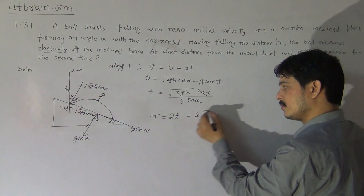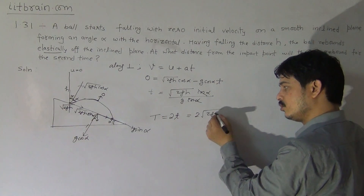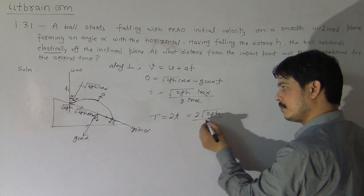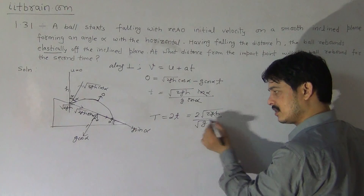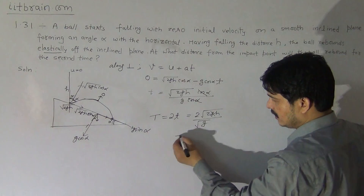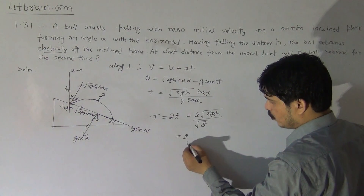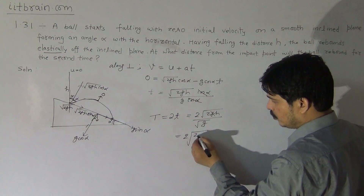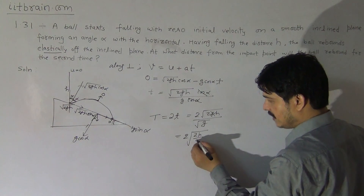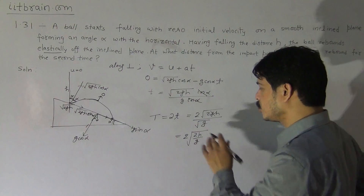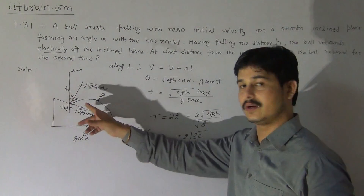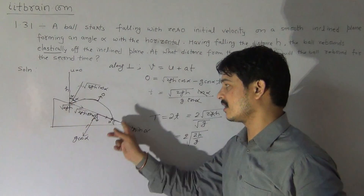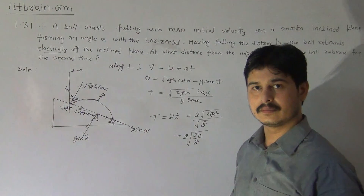Total time of the complete journey T is double the half-journey time, giving T = 2 times root 2gh by g, which simplifies to 2 root(2h/g). This is the total time the particle takes for the complete path between the first and second rebounds.